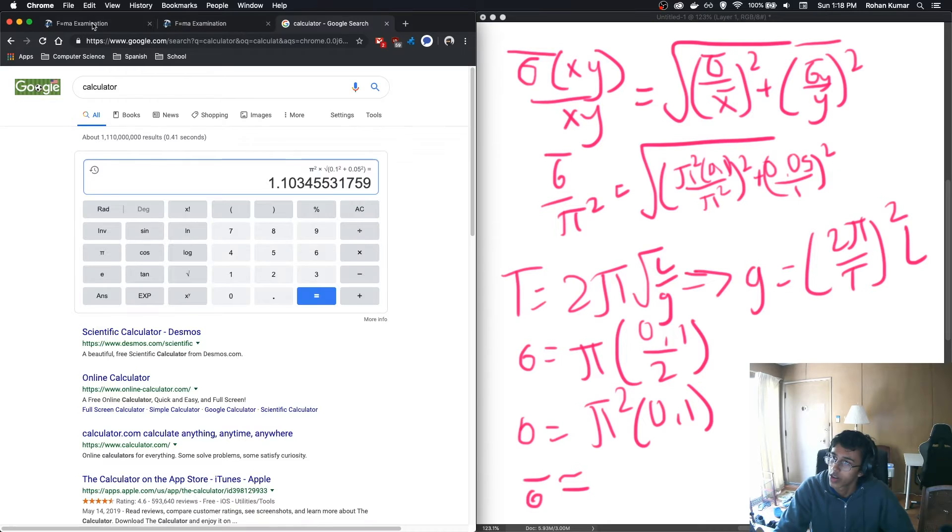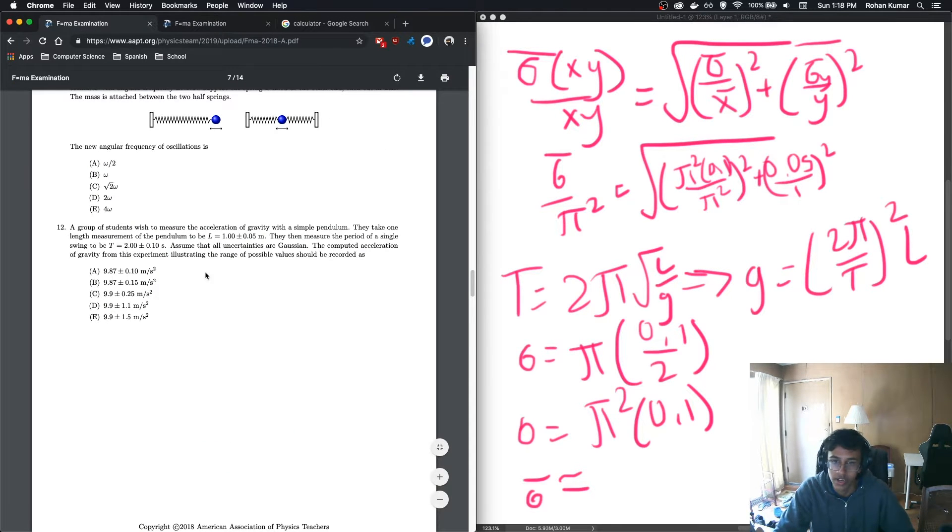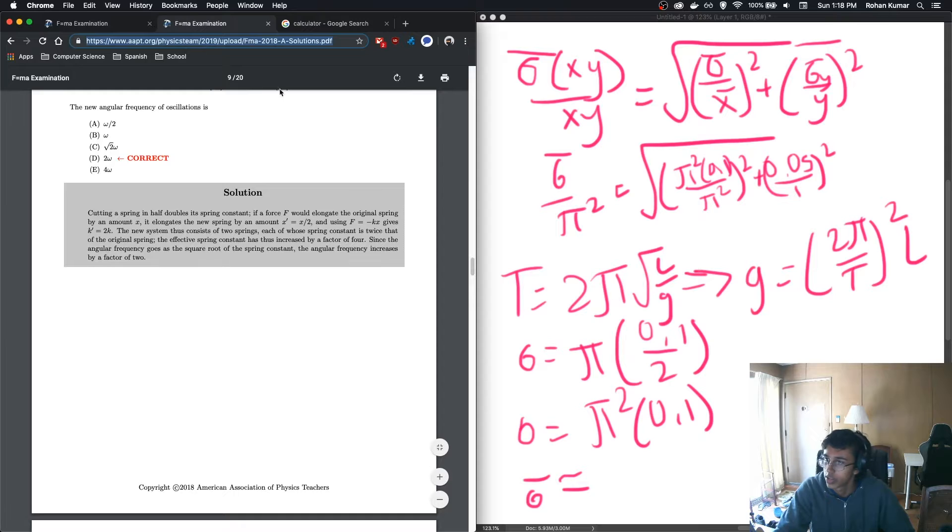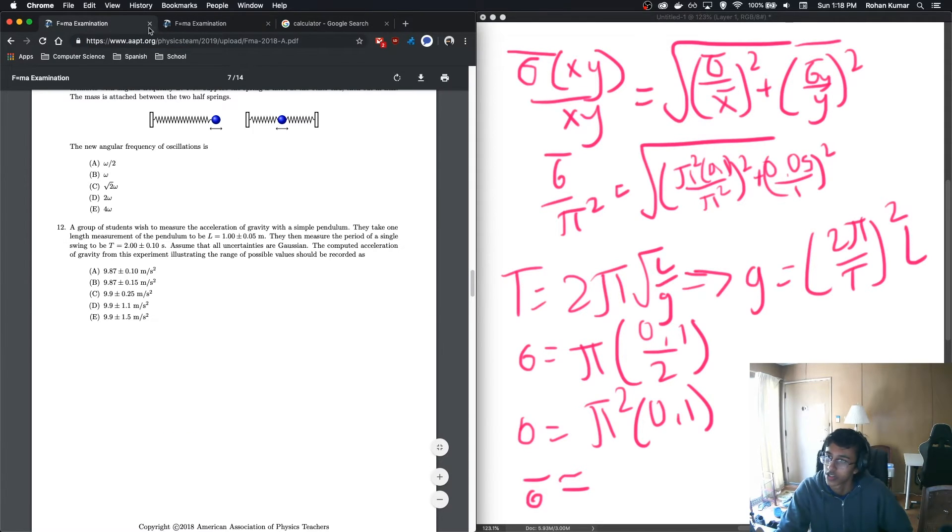And we get 1.1. And now we look at our answer choices. There's only one 1.1, so it must be D. Let's check the answer. And it is correct. Nice. Moving on to number 13.